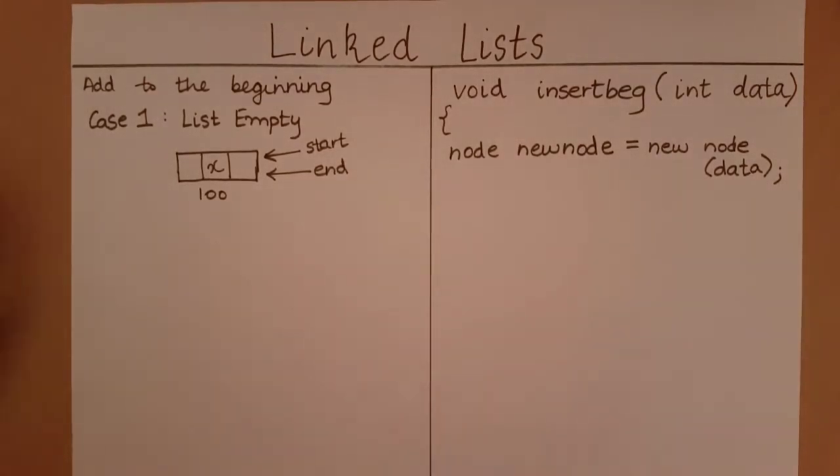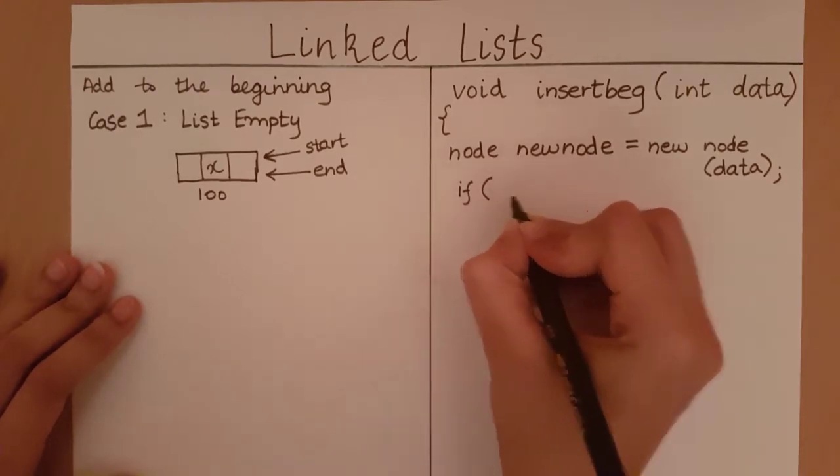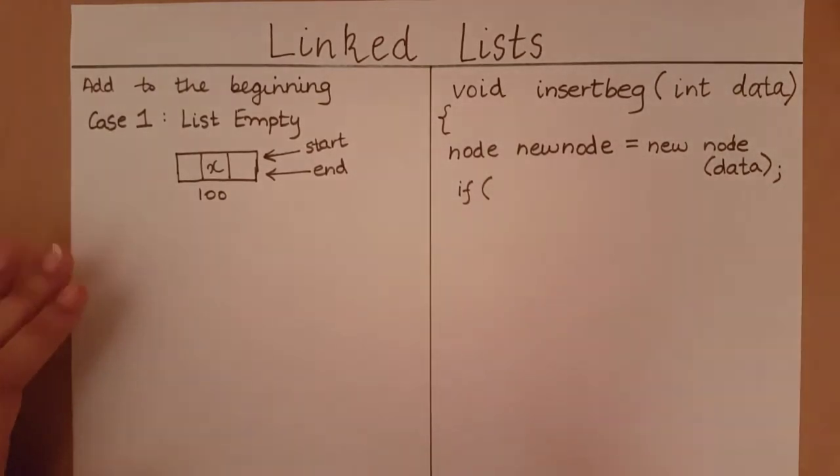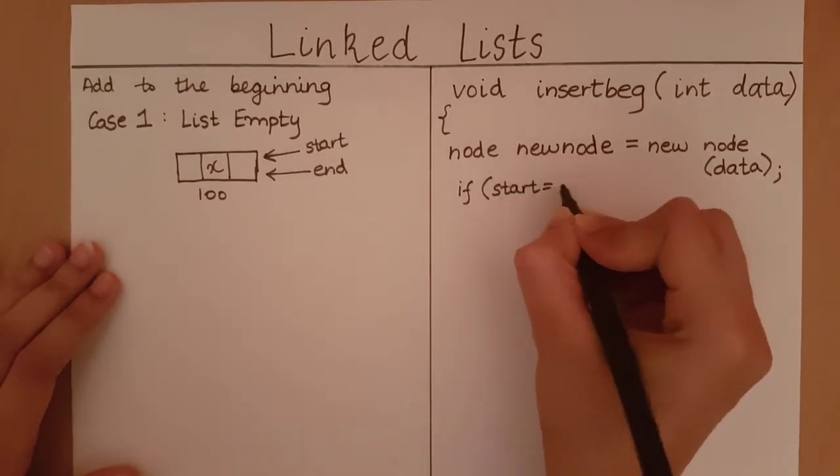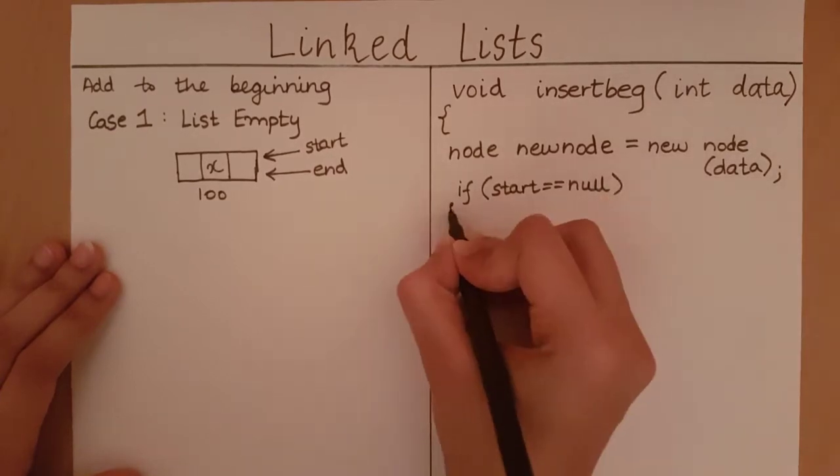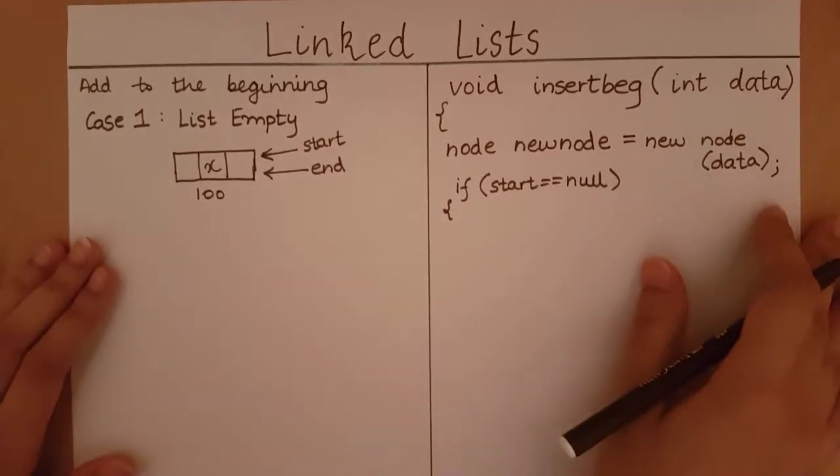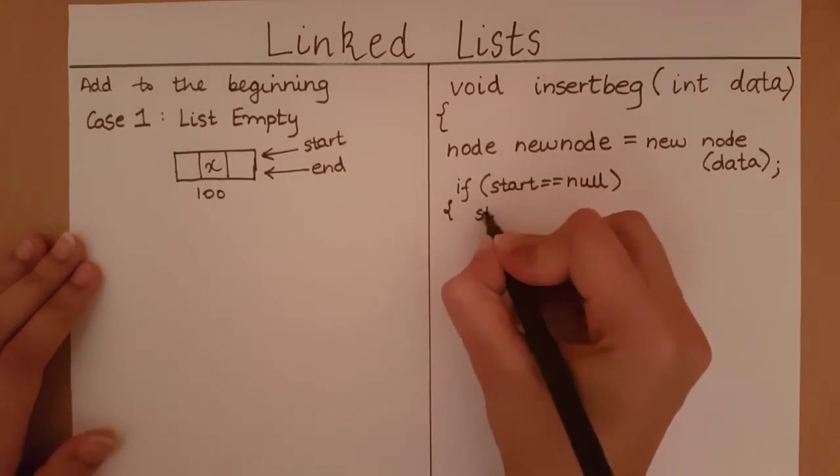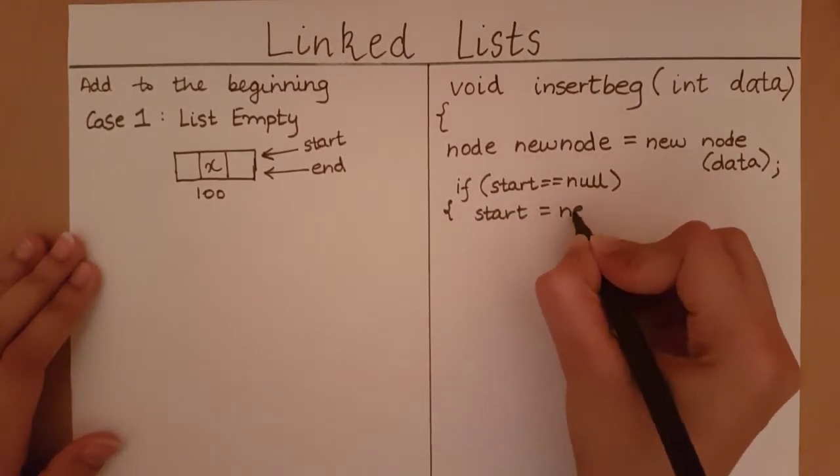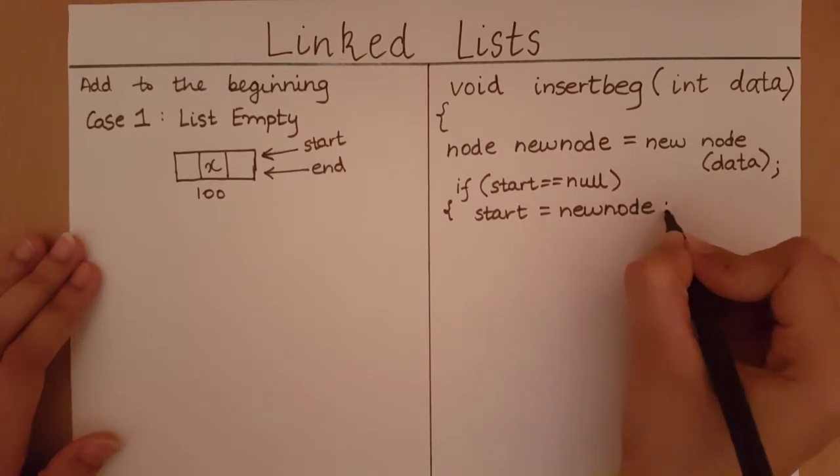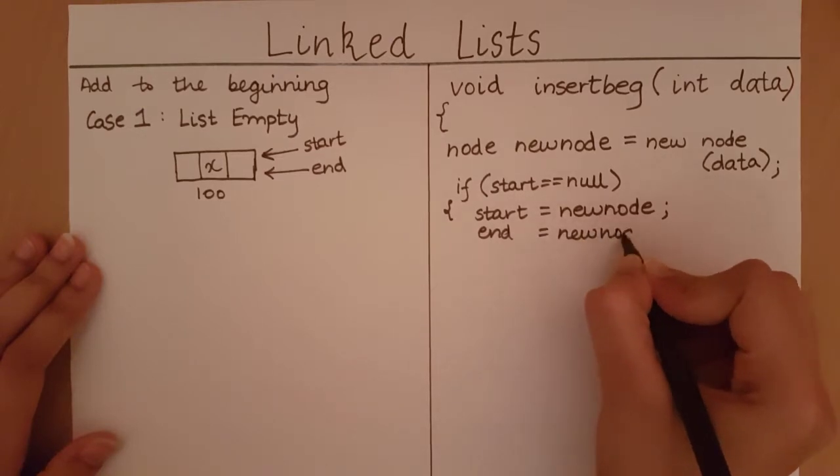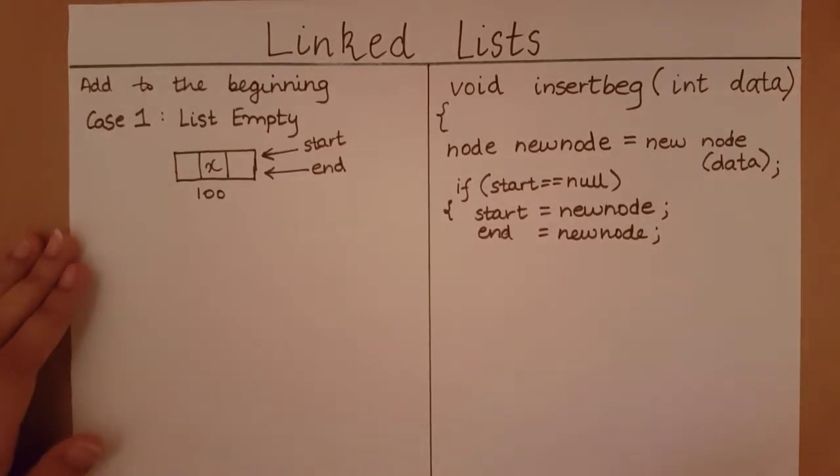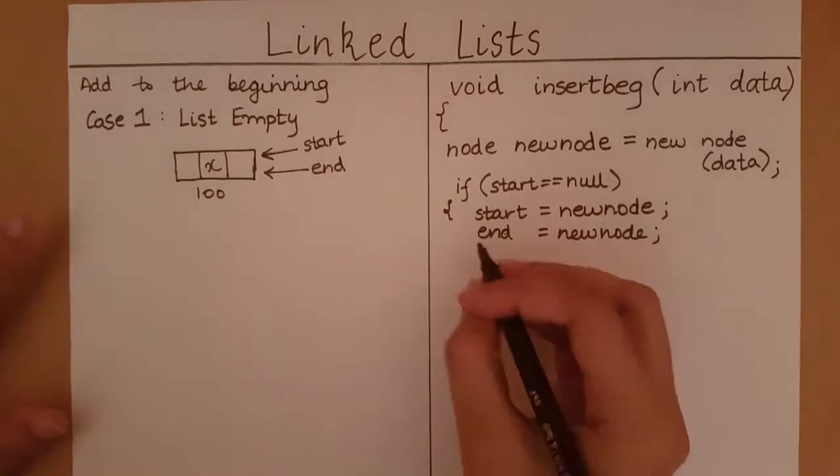So let's see how we are going to write that. So if the list is empty, we know the list is empty when start is equal to null. In such a case I must initialize both my start node and my end node to new node. After this we have completed inserting the element into an empty list and we can return from the function.